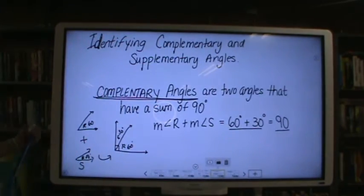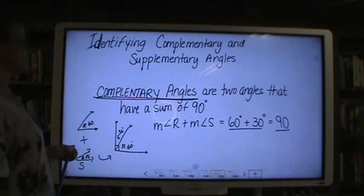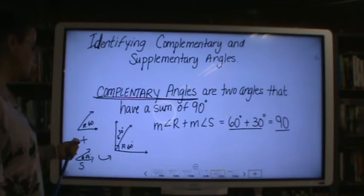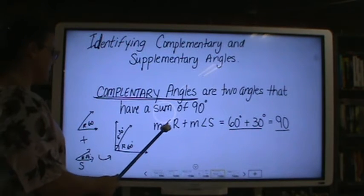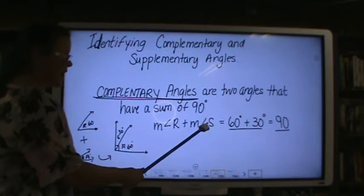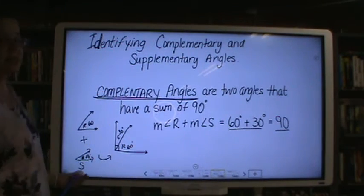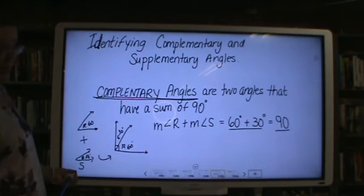Identifying complementary and supplementary angles. Complementary angles are two angles that have a sum of 90 degrees. Measure of R plus the measure of angle S, 60 plus 30 is 90. They would be considered complementary angles.